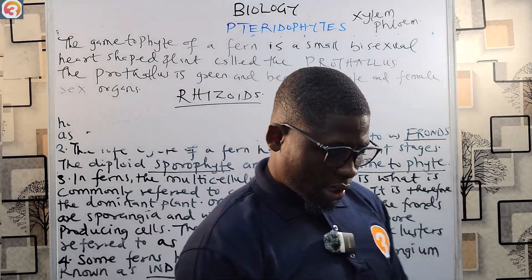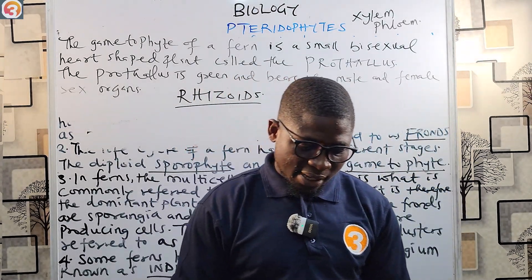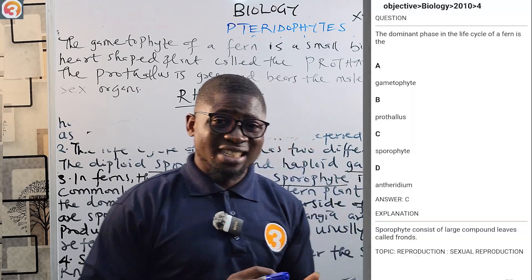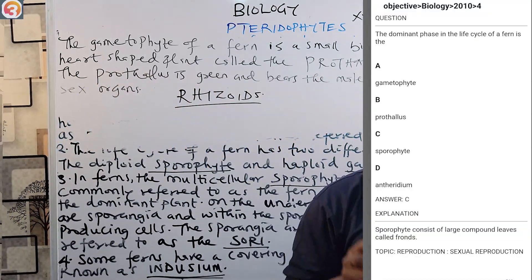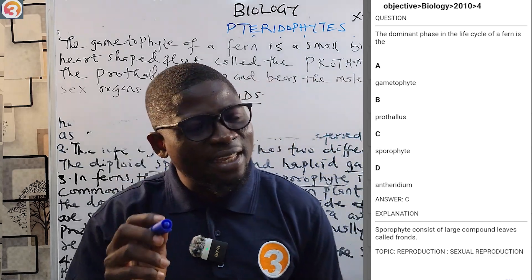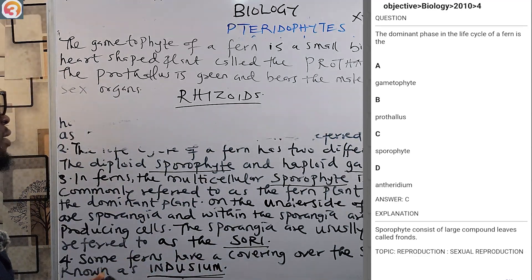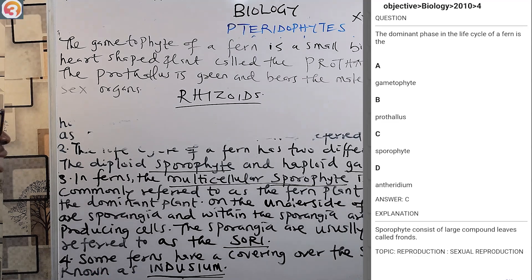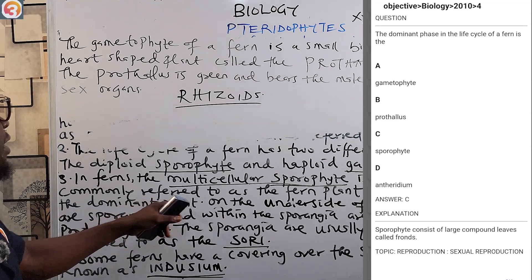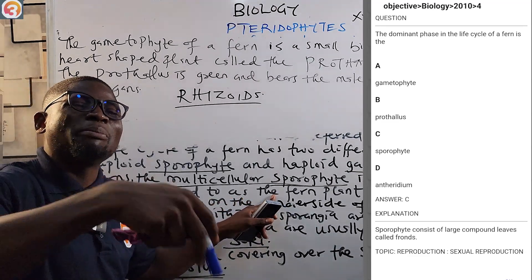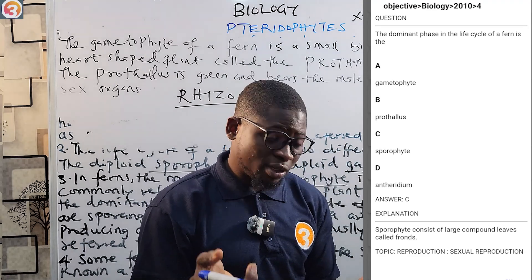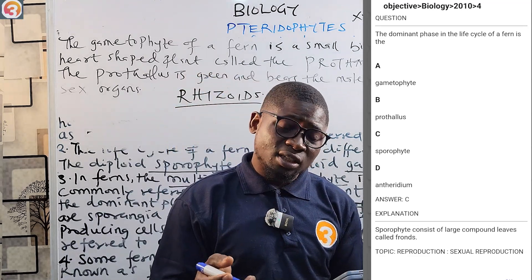Here's a 2010 JAMB question, number 4: 'The dominant phase in the life cycle of a fern is...' We just covered this - the dominant phase is the multicellular sporophyte. The sporophyte is what is called the fern plant itself, and it is the dominant plant in the fern's life cycle.